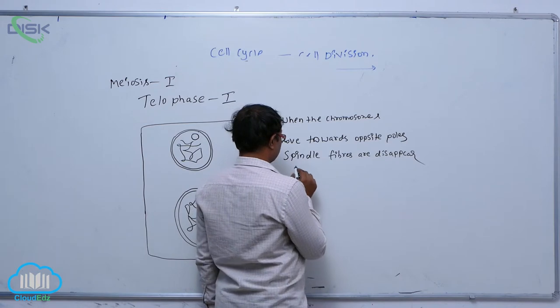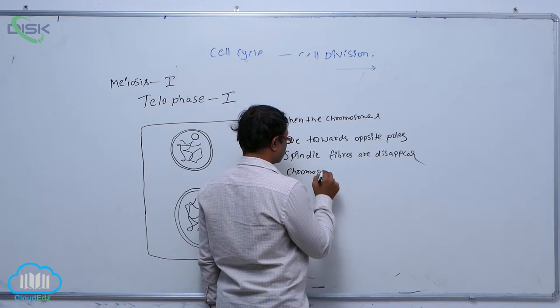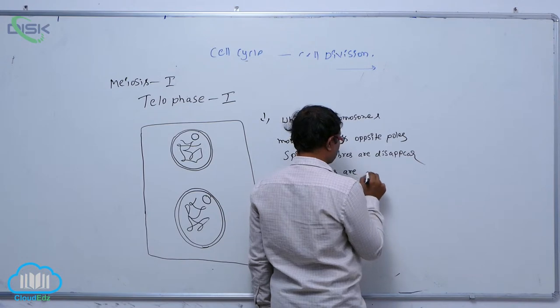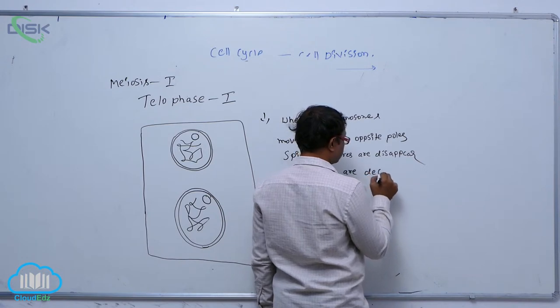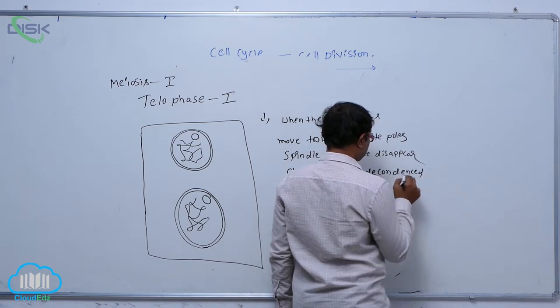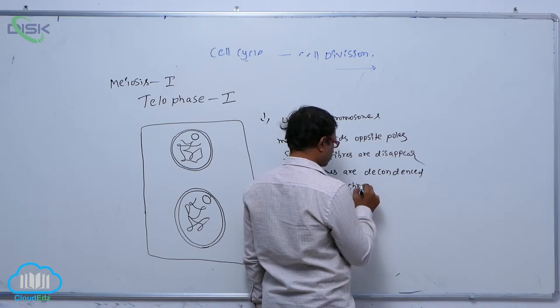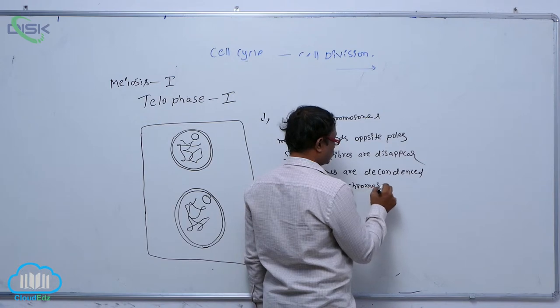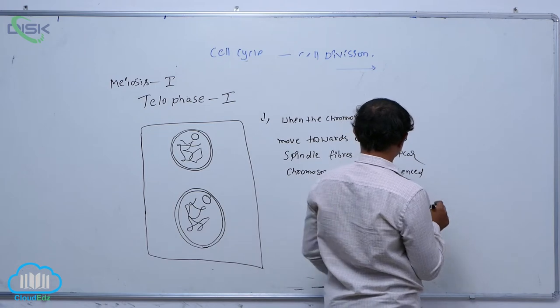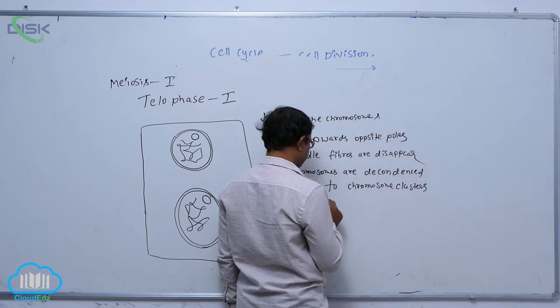Chromosomes decondense to form chromosome clusters at each pole.